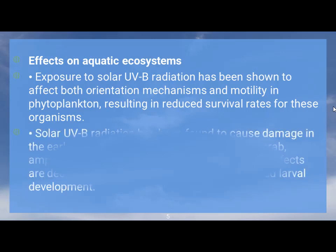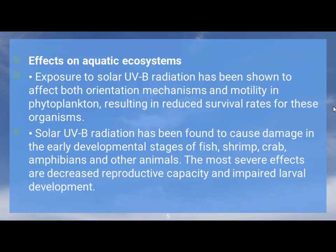Solar UVB radiation has been found to cause damage in the early developmental stages of fish, shrimp, crab, amphibians, and other animals. The most severe effects are decreased reproductive capacity and impaired larval development.